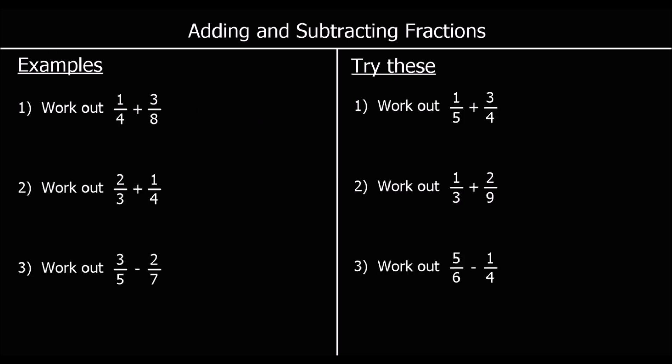In these questions we are being asked to add and subtract fractions with different denominators. The way we do that is to change the fractions using equivalent fractions to make the denominators the same, and then once we've got the denominators the same, we can add or subtract them as before. The first question says: one-quarter plus three-eighths.